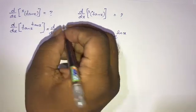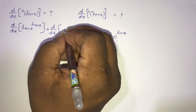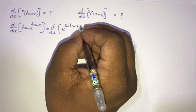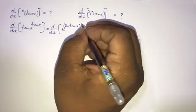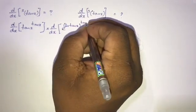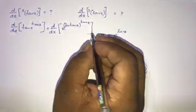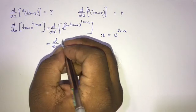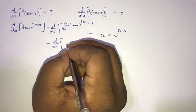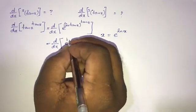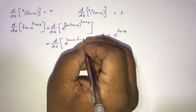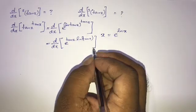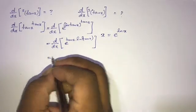Applying this, we write d/dx of e to the ln of tan x, raised to the tan x power. Multiplying the exponents, this becomes d/dx of e to the power of tan x times ln of tan x.